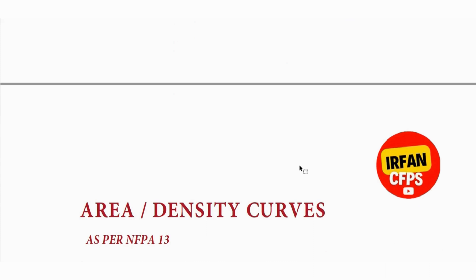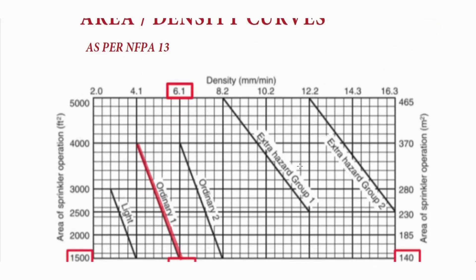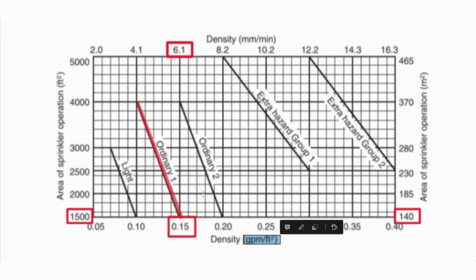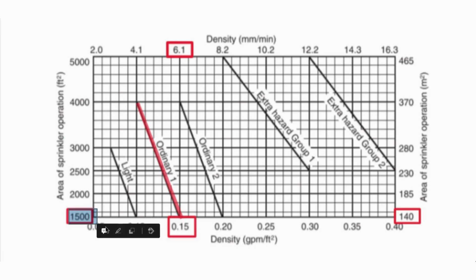Area-density curves as per NFPA 13 are used to determine the design area of sprinkler operation and the corresponding density based on occupancy hazards. These details are required to be entered in the Alight Fire software for performing hydraulic calculations. For instance, let's consider ordinary hazard group 1 occupancy.